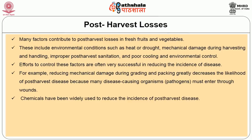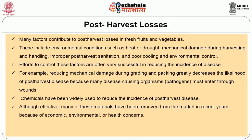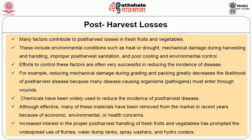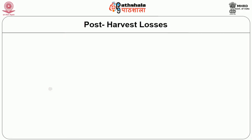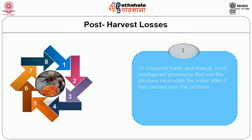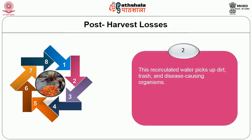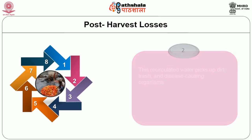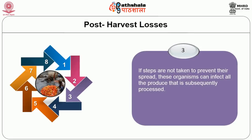Chemicals have been widely used to reduce the incidence of post-harvest diseases, although effective, many of these materials have been removed from the market in recent years because of economic, environmental or health concerns. Increased interest in proper post-harvest handling has prompted the widespread use of flumes, water dump tanks, spray washers and hydro coolers. To conserve water and energy, most post-harvest processes that wet the produce recirculate the water after it has passed over the produce. This recirculated water picks up dirt, trash and disease-causing organisms, and if steps are not taken to prevent their spread, these organisms can infect all the produce that is subsequently processed.